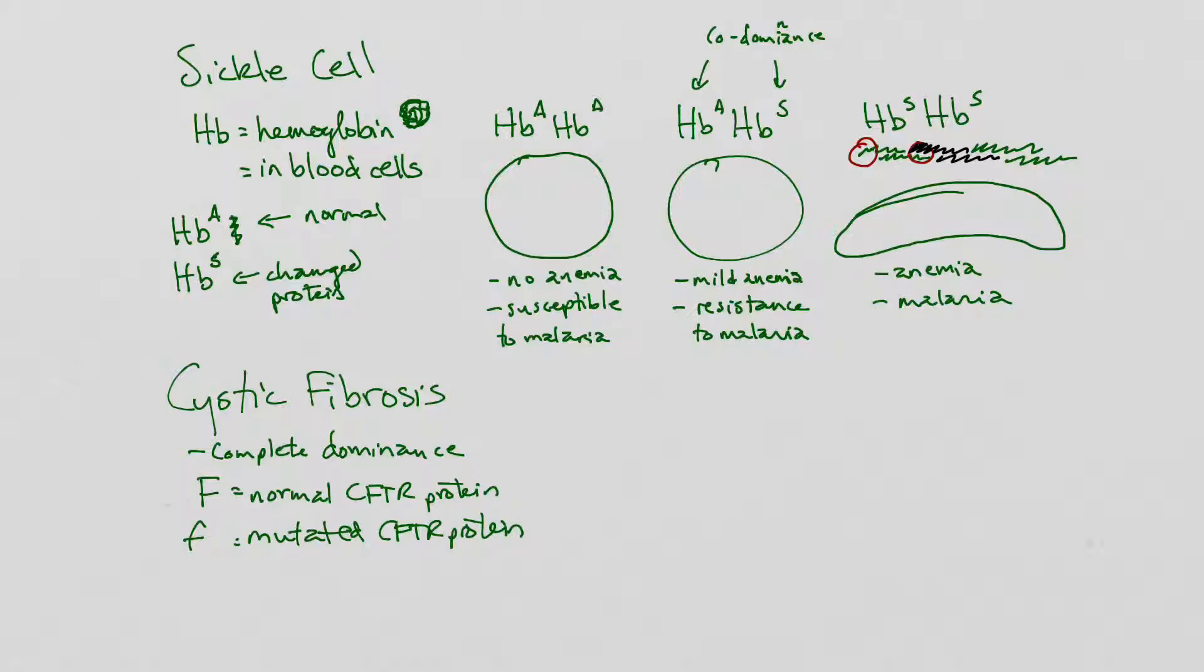And little f for a mutated CFTR protein. So, how does cystic fibrosis work? Well, let's imagine your alveoli right here at the end of a bronchiole. And your alveoli are covered in a layer of mucus that is nice. It helps protect. It helps keep bacteria stuck to it so you can get rid of the bacteria. It provides a liquid surface for oxygen to pass through and so on and so forth.